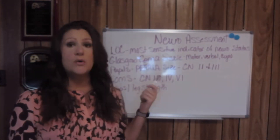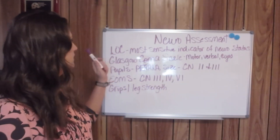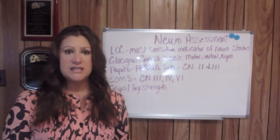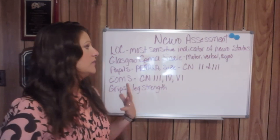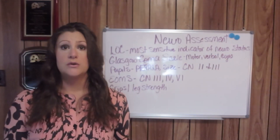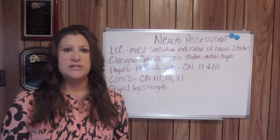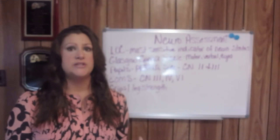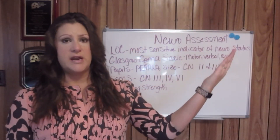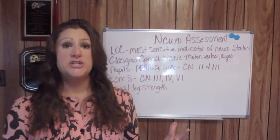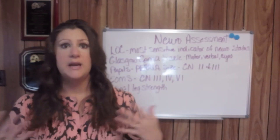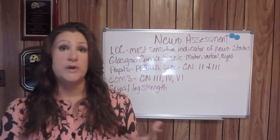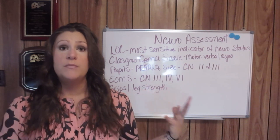Level of Consciousness is the most basic indicator of how your patient is doing neurologically. Level of Consciousness means how awake and alert your patient is. The first level to know is the lethargic patient.